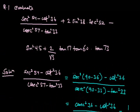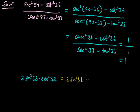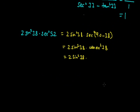Now the second part is 2sin²38 · sec²52. We convert sec²52 as sec²(90 - 38), and since sec(90 - θ) = cosec θ, this becomes 2sin²38 · cosec²38. Since cosec²38 = 1/sin²38, the sin²38 terms cancel, giving an answer of 2 for this part.